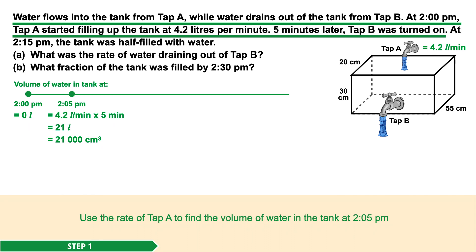So using this rate, we can find the volume of water in the tank at 2:05 p.m. 4.2 liters per minute multiplied by 5 minutes gives us a total of 21 liters. This is the same as 21,000 cubic centimeters.